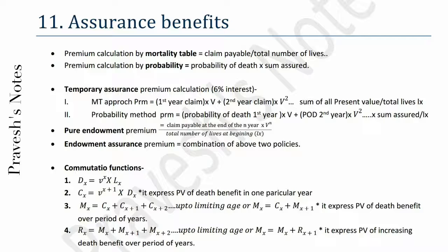Commutation functions: dx equals vˣ × lx. Cx equals v^(x+1) × dx. Cx expresses the present value of death benefit in one particular year. Mx equals Cx + C(x+1) + C(x+2) up to limiting age, or Mx equals Cx + M(x+1). Mx expresses the present value of death benefit over a period of years.